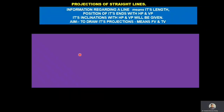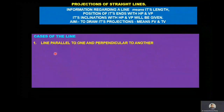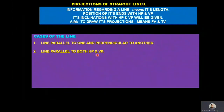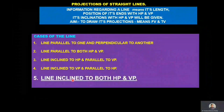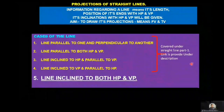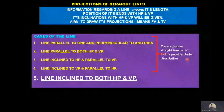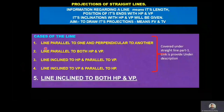Now we will move towards cases under projection of straight lines. Case 1: line parallel to one and perpendicular to another. Case 2: line parallel to both HP and VP. Case 3: line inclined to HP and parallel to VP. Case 4: line inclined to VP and parallel to HP. Case 5: line inclined to both HP and VP. The first four cases were discussed under Projection of Straight Lines Part 1 — a link is provided in the description.